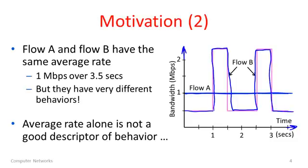Flow A and Flow B clearly have very different behavior as far as the network is concerned. But they actually have the same average rate, which is one megabit per second. So we can see from this example that the average rate alone is not a good descriptor of behavior in terms of what the network can expect from traffic flows.